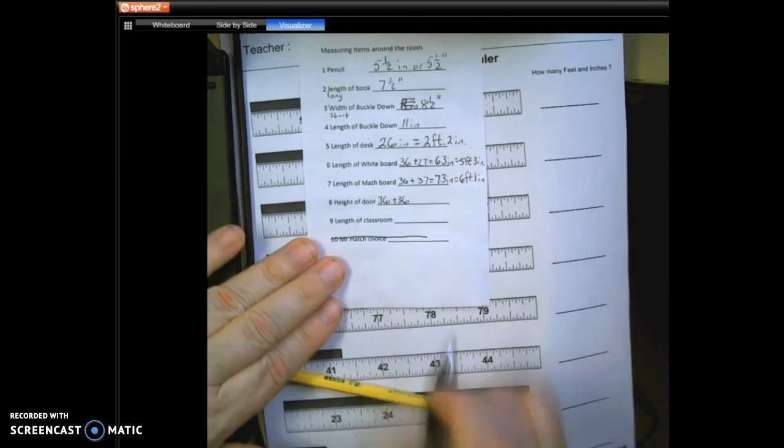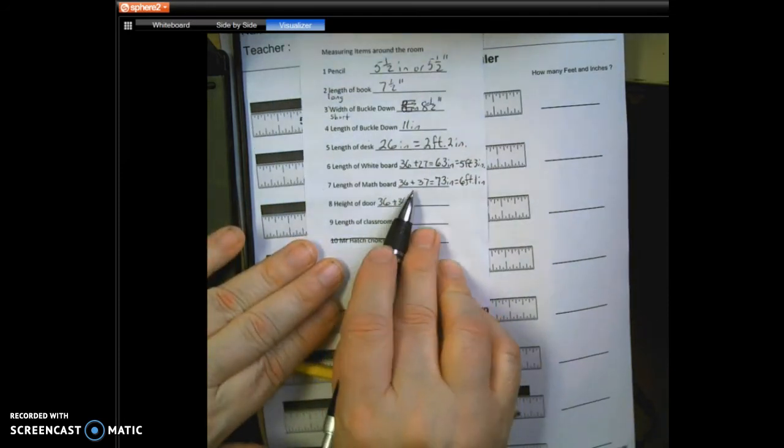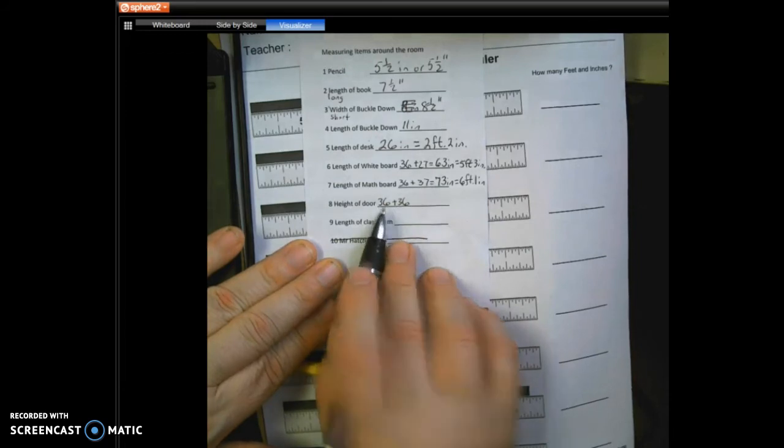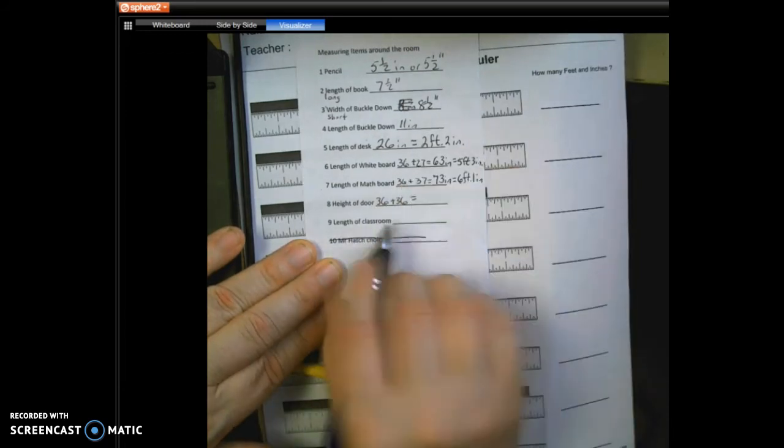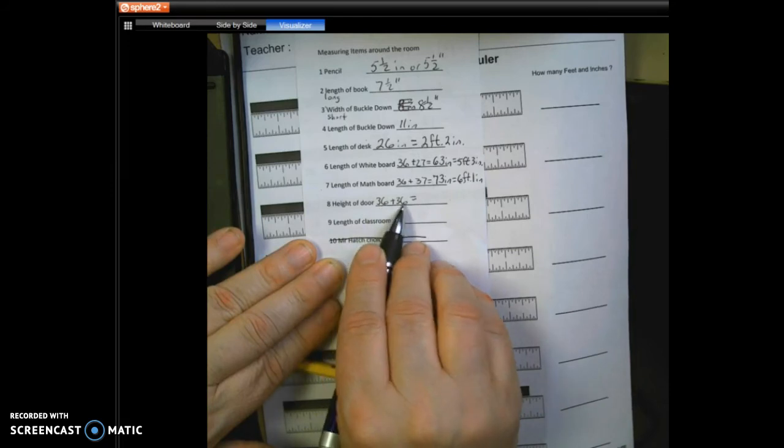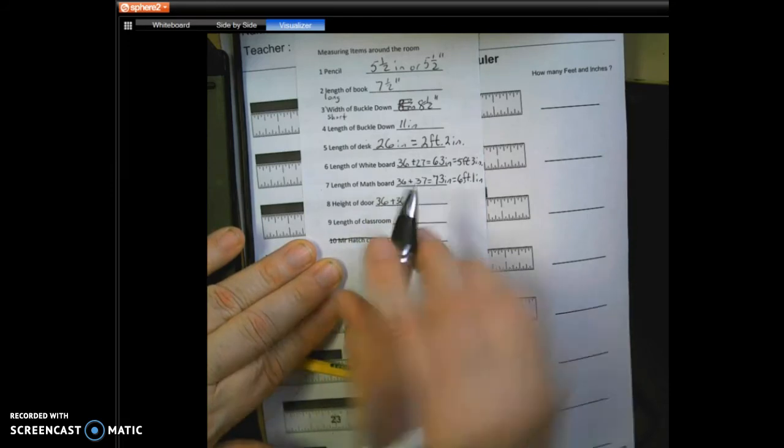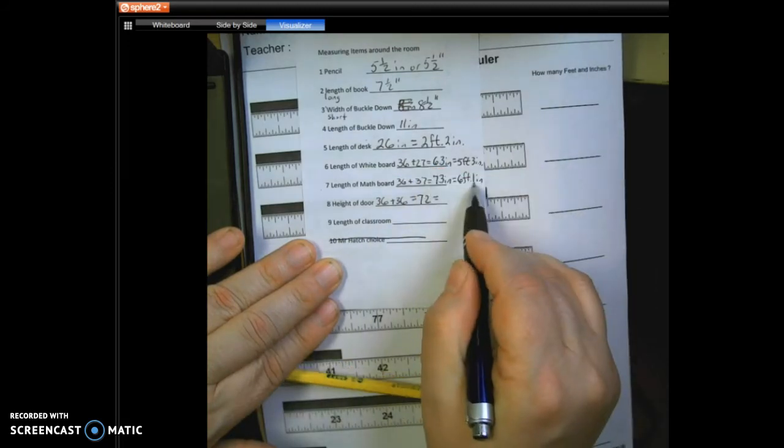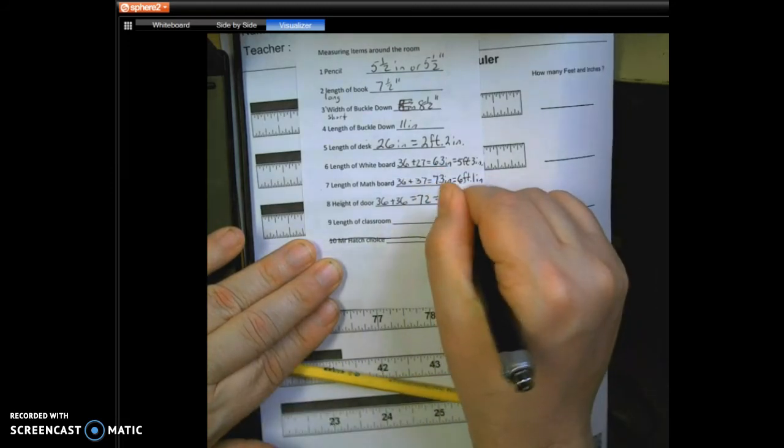The 36 and 36, that sounds really familiar to this one, and it's one less. So I know that 30 and 30 is 60. 60 plus six is 66. 66 plus six is 72, which is that one less than that. So that's going to equal, one less, exactly six feet.